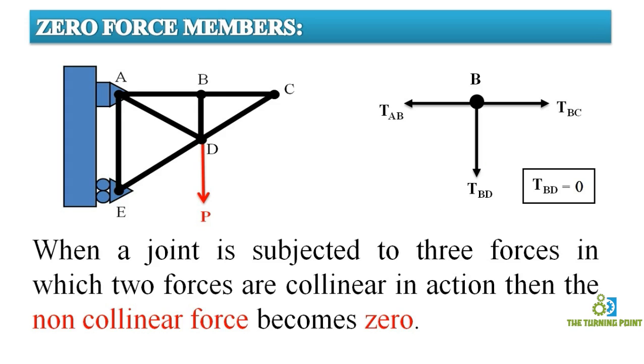So in this way you can find the zero force members. It is very easy to calculate whether the non-collinear force is vertical or horizontal or is it incline. Whatever may be the case, always it is going to be zero. The condition is there should be three forces and in those three forces, two forces should be collinear.